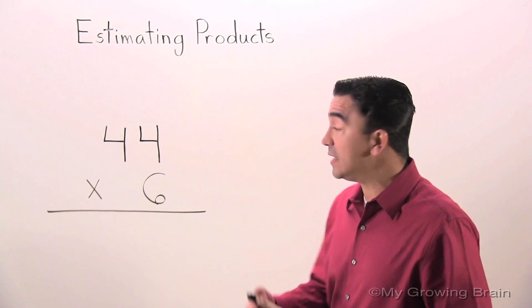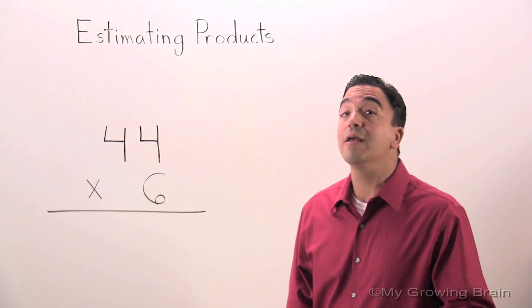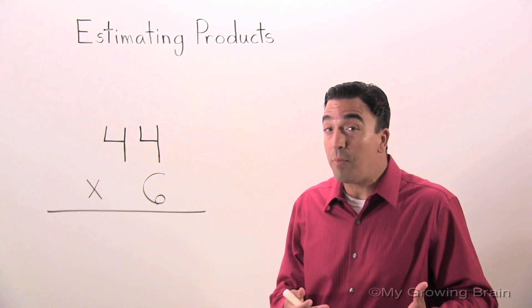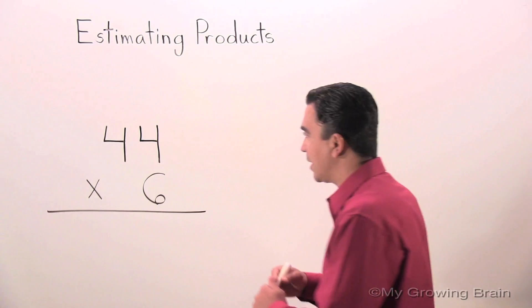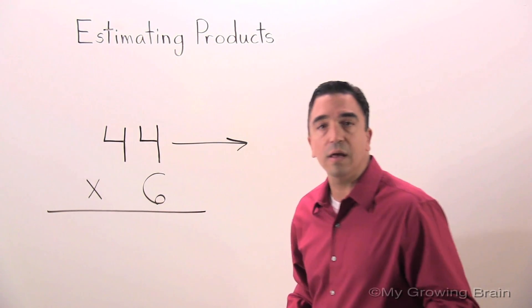And what is the first step we need to take? Well, we're going to need to round 44 to the nearest 10. Now, if you don't remember how to round or you need a little more help with it, go back to one of our previous lessons. Alright, here we go. I'm going to round 44 to the nearest 10. I get 40.